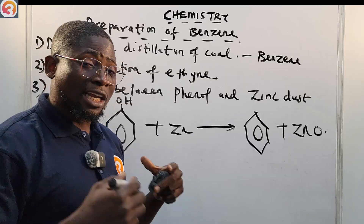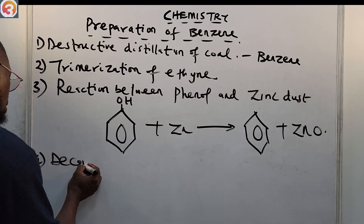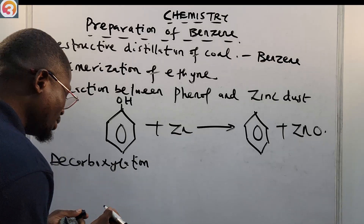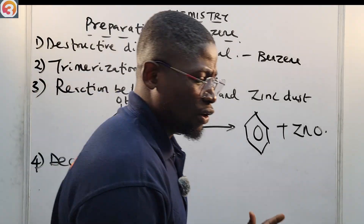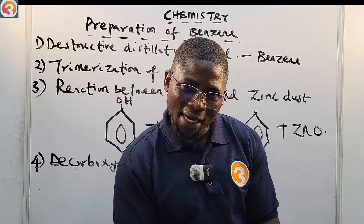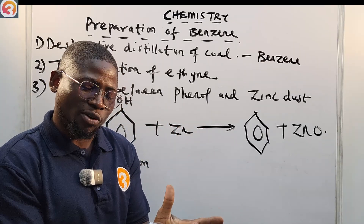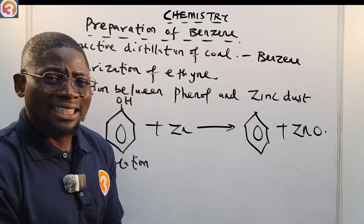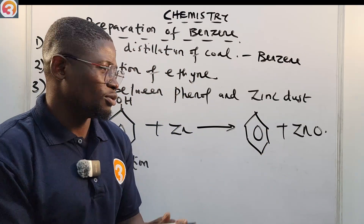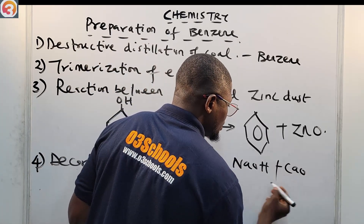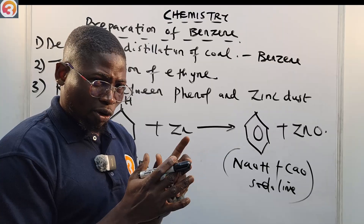The fourth method is decarboxylation. From the word itself, decarboxylation means we are removing the carboxylic acid group to give us the benzene ring. What we do is find an acid that contains a benzene ring — like benzoic acid, which is a benzene ring with a carboxylic acid group attached — and react its salt with soda lime. Soda lime is sodium hydroxide (NaOH) plus calcium oxide (CaO).